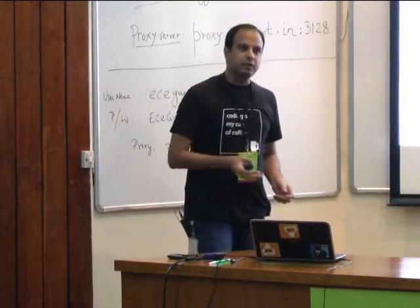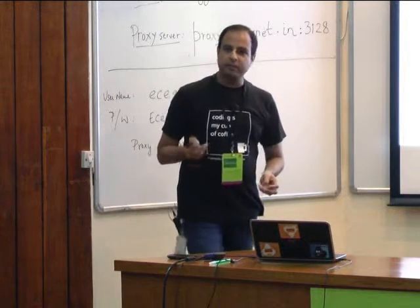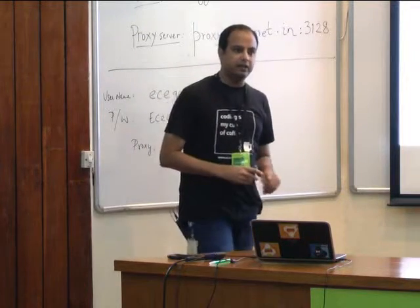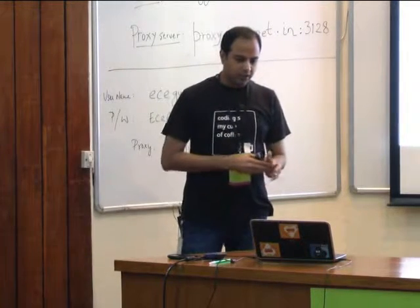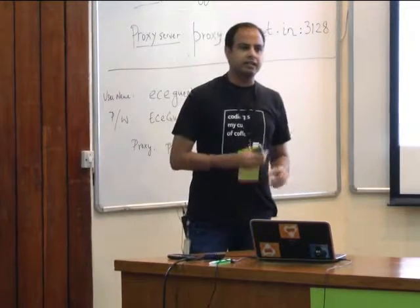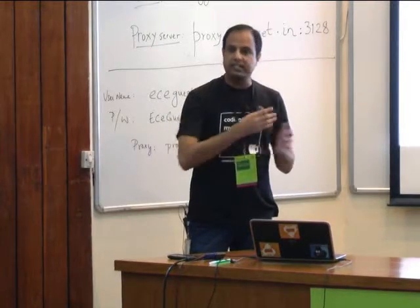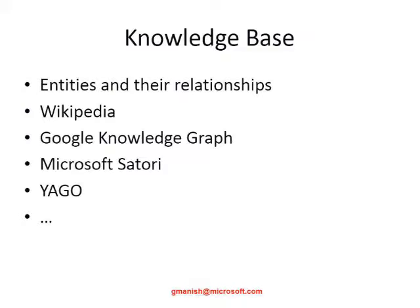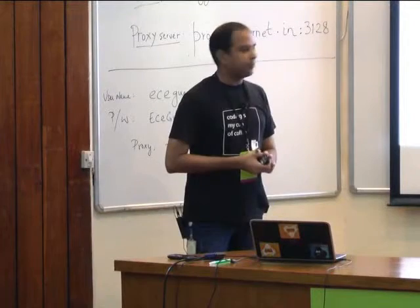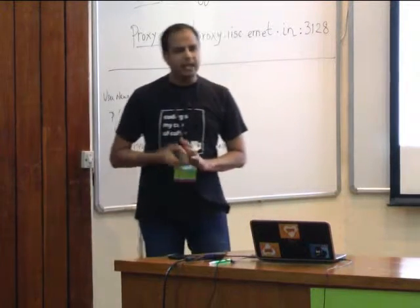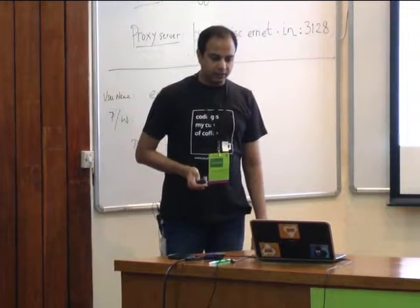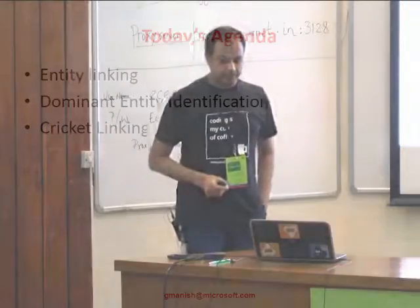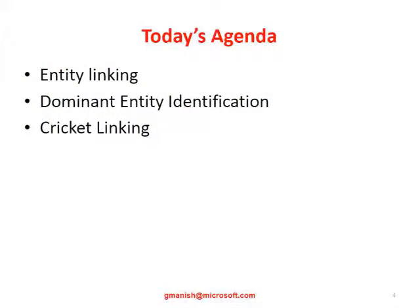Each entity has a name, a type — some entities are books, some are locations, some are people — as well as attributes, descriptions, and relationships to other entities. So a Knowledge Graph or Knowledge Base typically contains a collection of entities and a representation in terms of connections with other entities. Knowledge Bases include Wikipedia, Google Knowledge Graph, Microsoft Satori, and Yago — there are lots of such Knowledge Bases available.